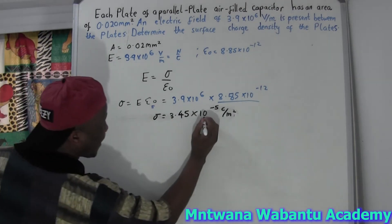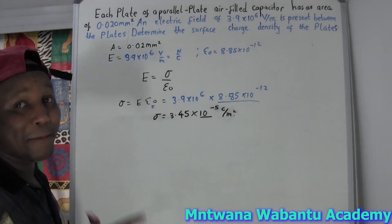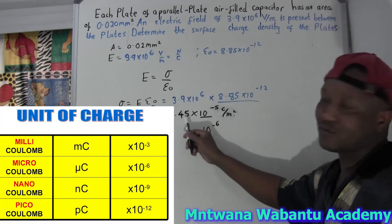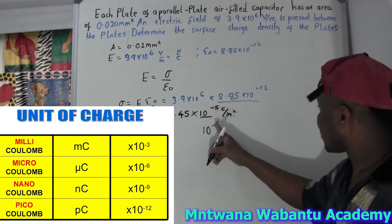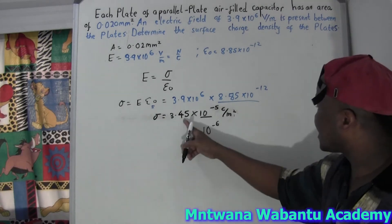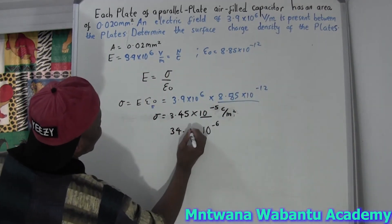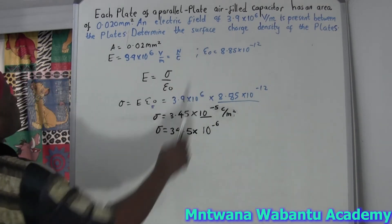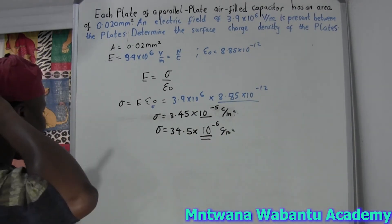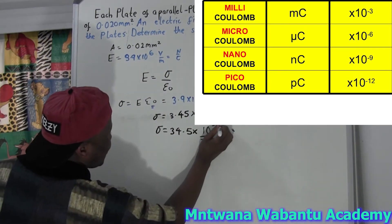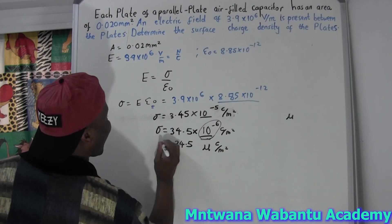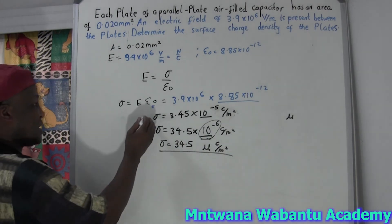I want to convert this to 10 to the power of negative 6 to get microcoulombs. From negative 5 to negative 6 is one step, so I move the decimal one step to the right. This gives 34.5 times 10 to the negative 6, which is the same as 34.5 microcoulombs per meter squared. That is our surface charge density.